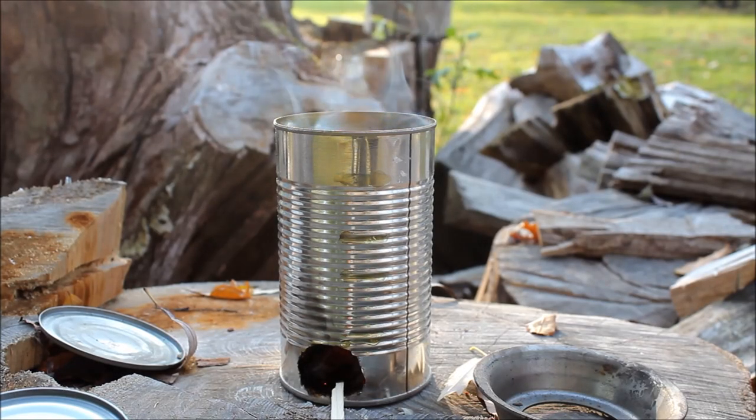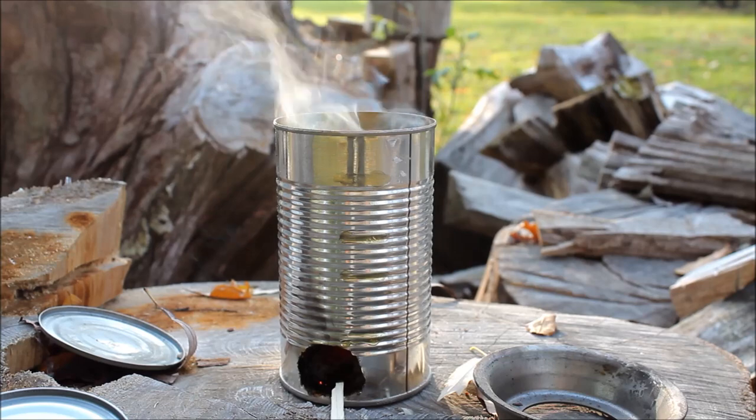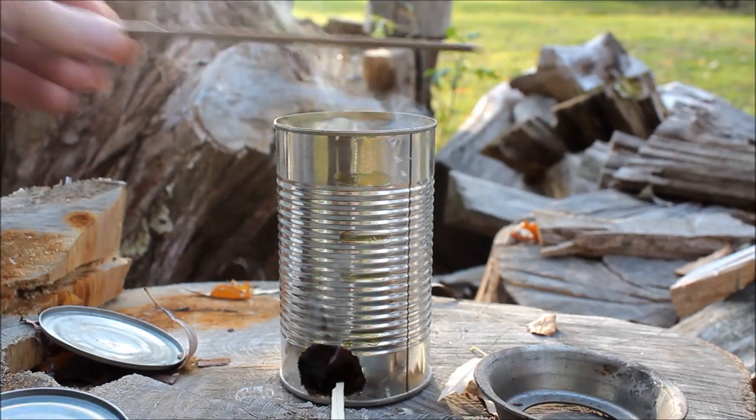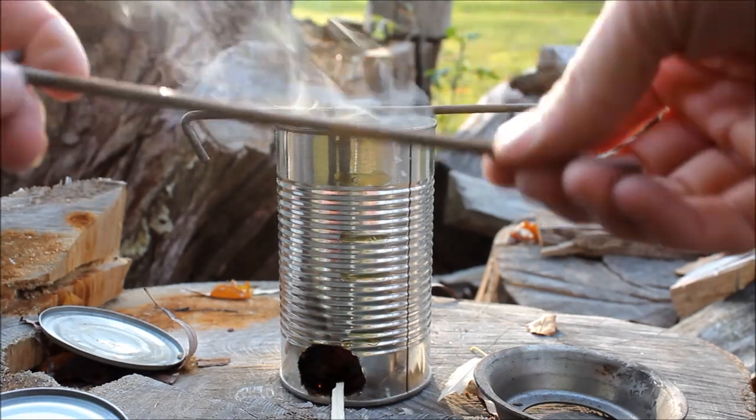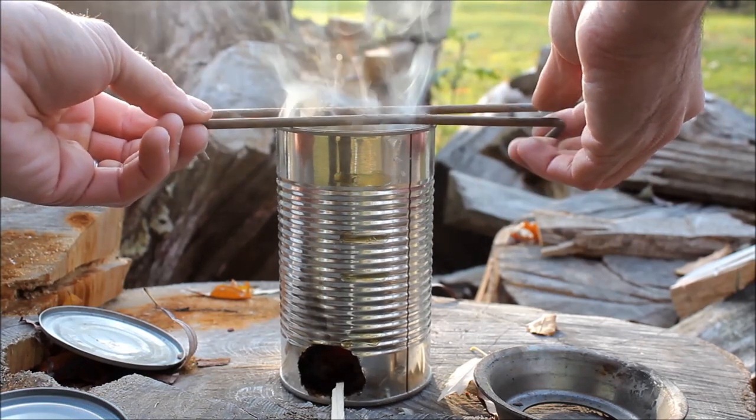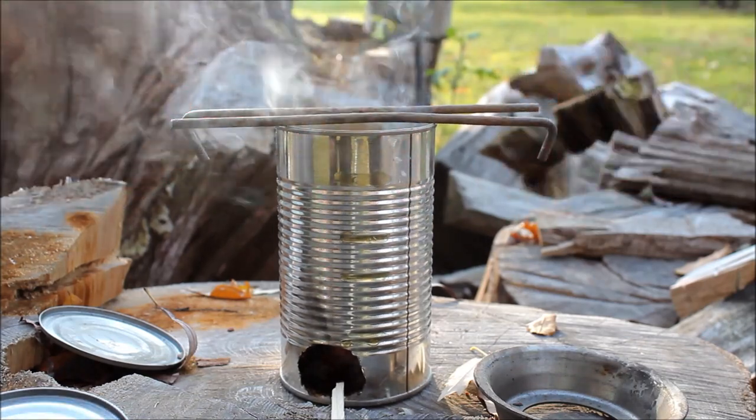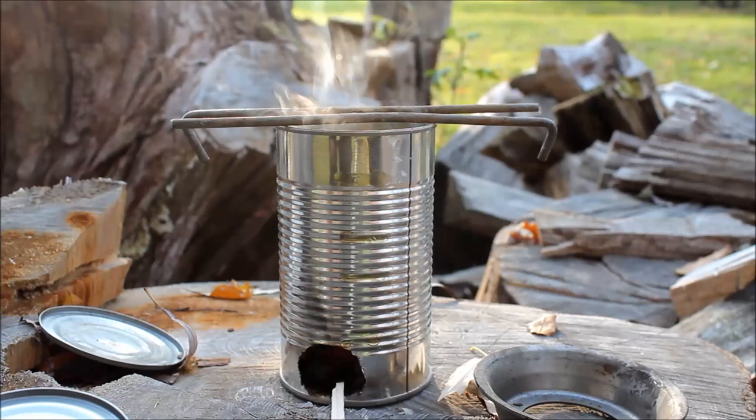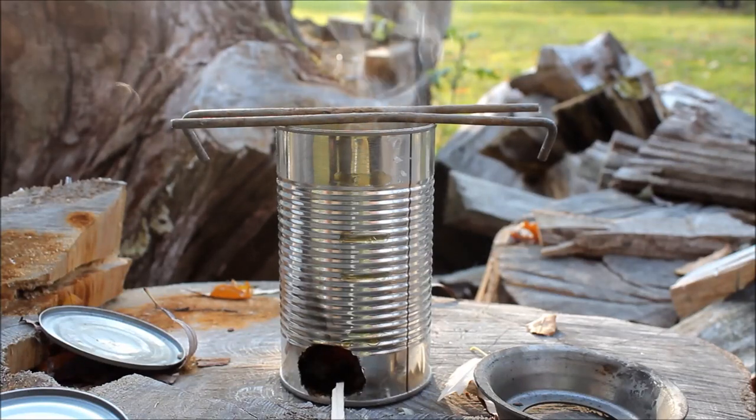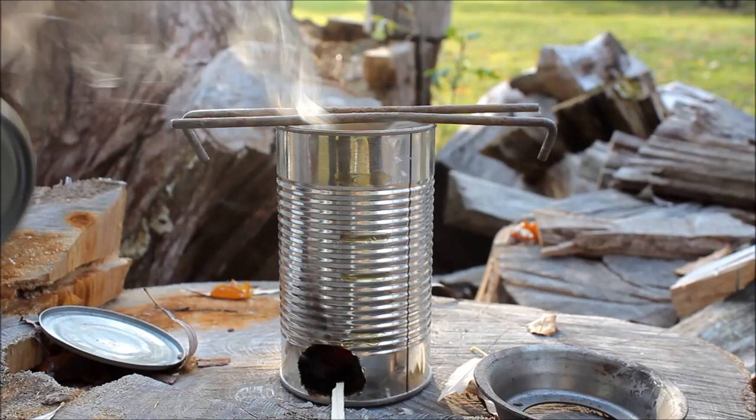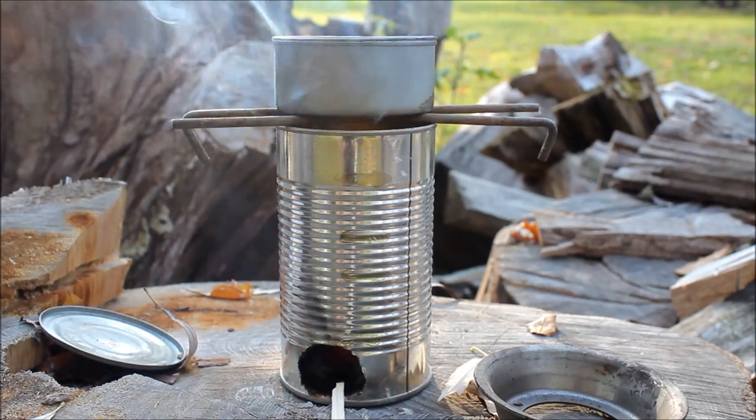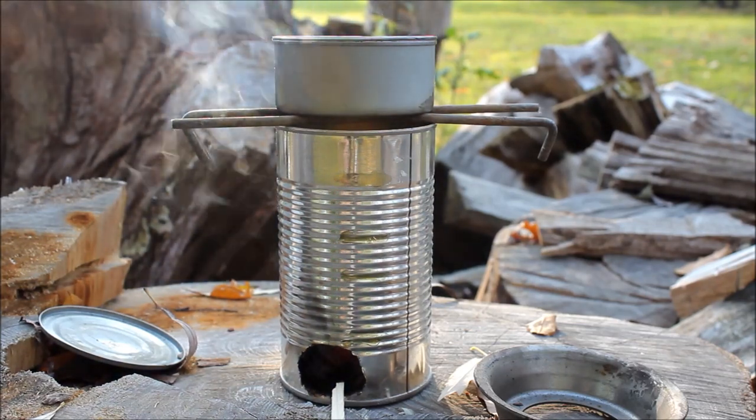Now you could drill holes at the top of your can to allow for some air flow. I'm just going to use some tent stakes just to give me a little bit of a gap there so everything can flow and move. And I'm just going to put my container right on top and let that cook.